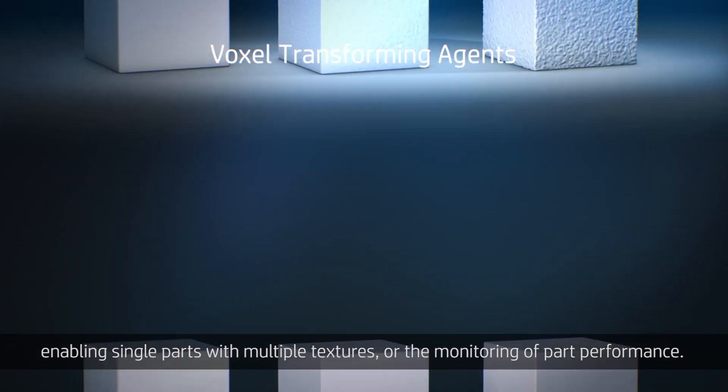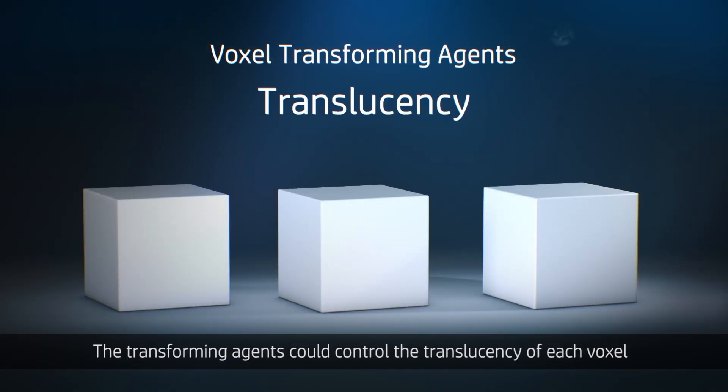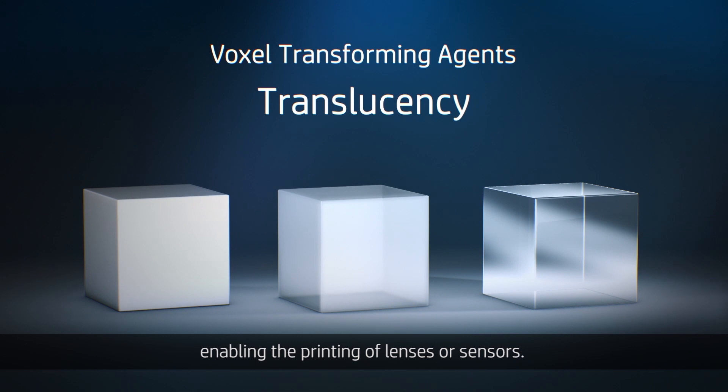The transforming agents could control the translucency of each voxel, enabling the printing of lenses or sensors.